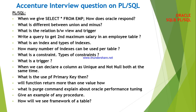The next questions are: what is an index and types of indexes, how many indexes can be used per table, what is a constraint and types of constraints, what is a trigger, and when can we declare a column as unique and not null at the same time? When you say unique and not null together, that is a primary key. The main purpose of a primary key is to remove duplicates — it uniquely identifies a row or record in a relation and does not allow duplicate or null values.